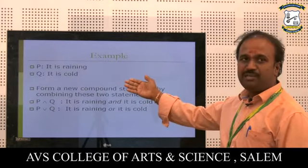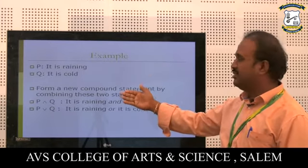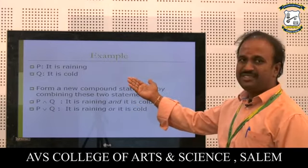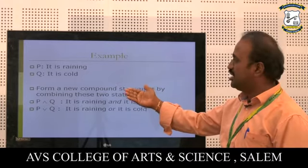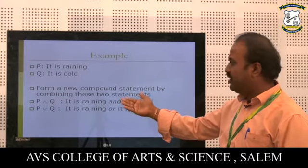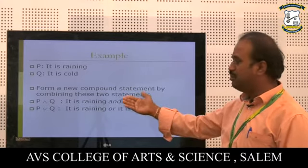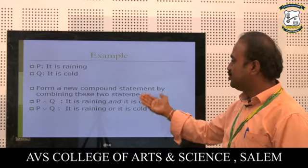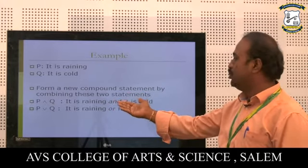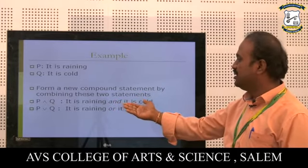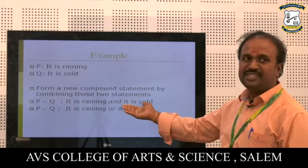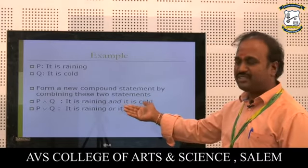Example for conjunction: Let P be the statement 'It is raining' and Q be the statement 'It is cold.' Combining these two statements forms the compound statement P and Q: 'It is raining and it is cold.' This is an example of conjunction.